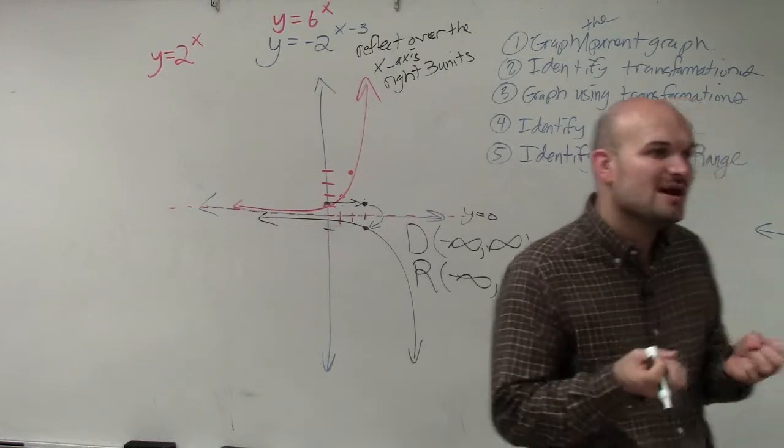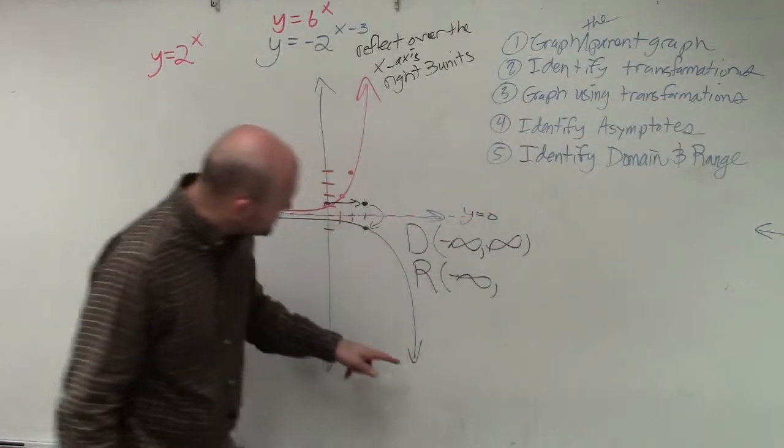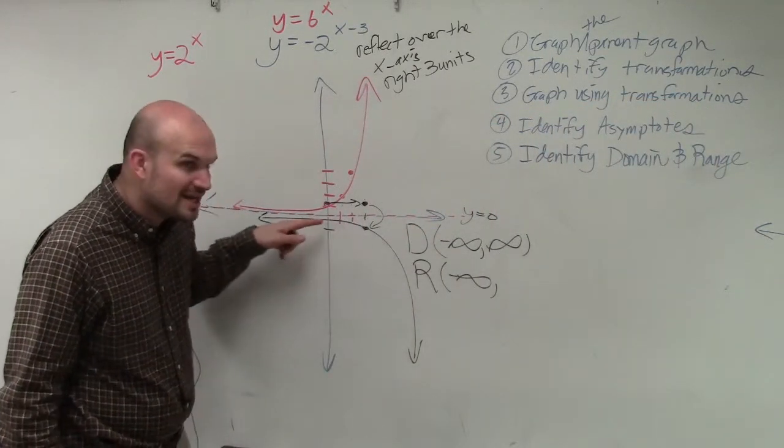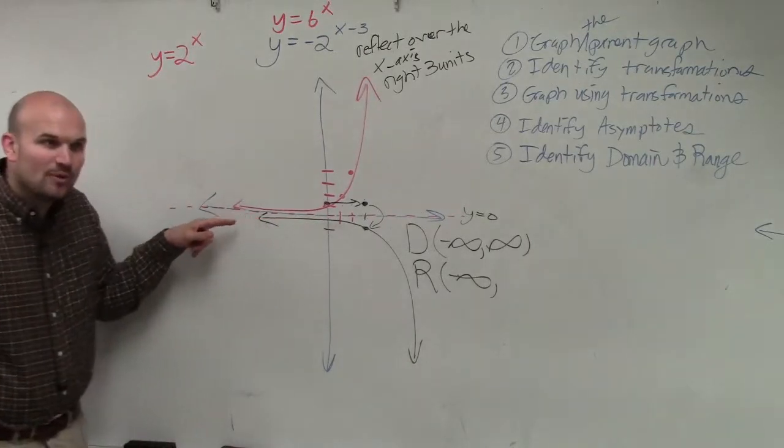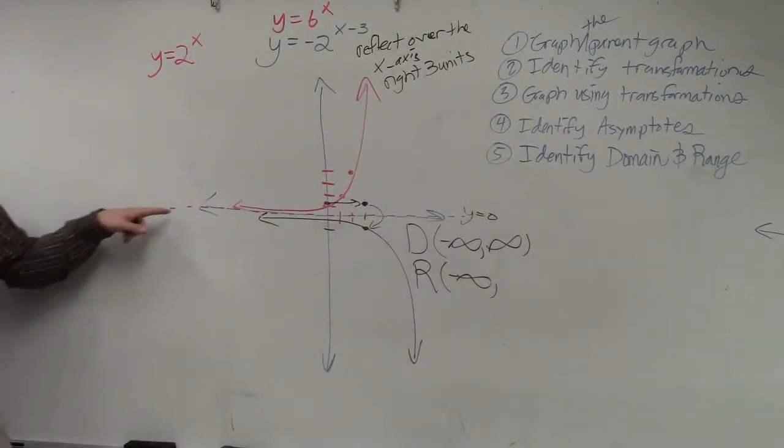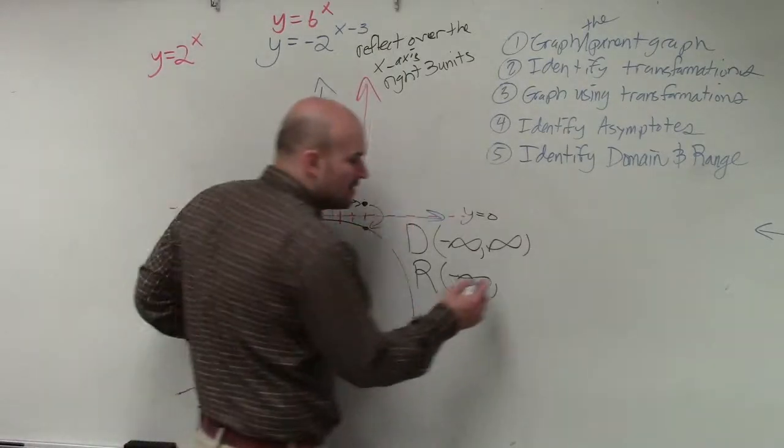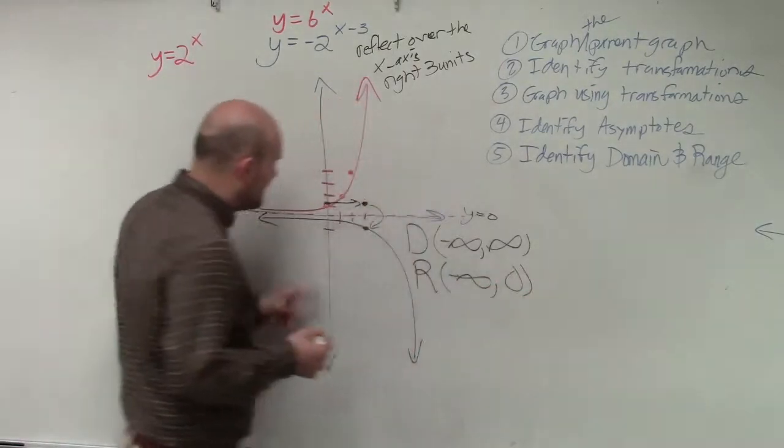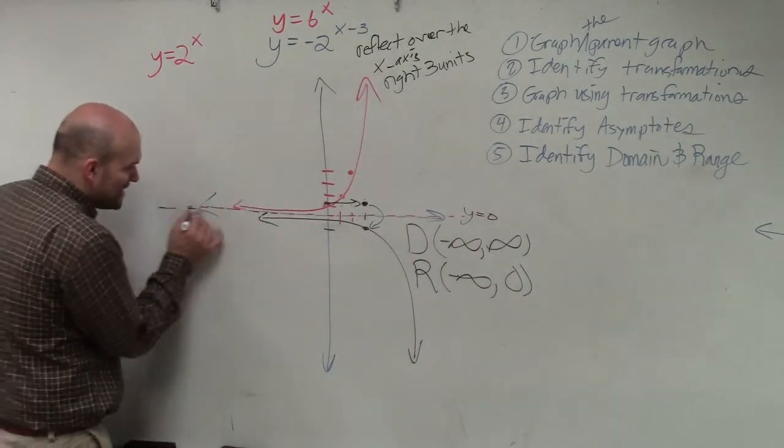So this graph approaches this asymptote. What is the asymptote? Zero. The asymptote is right here at zero.